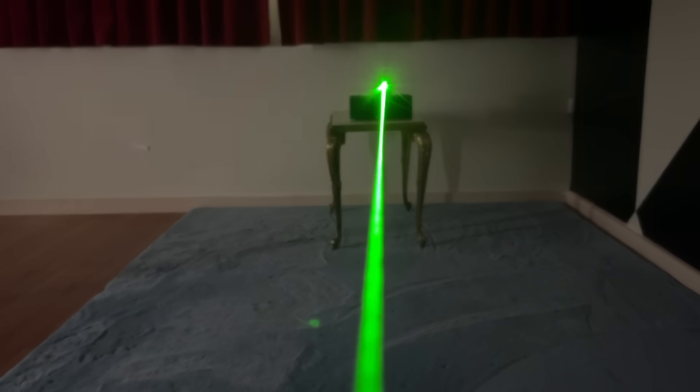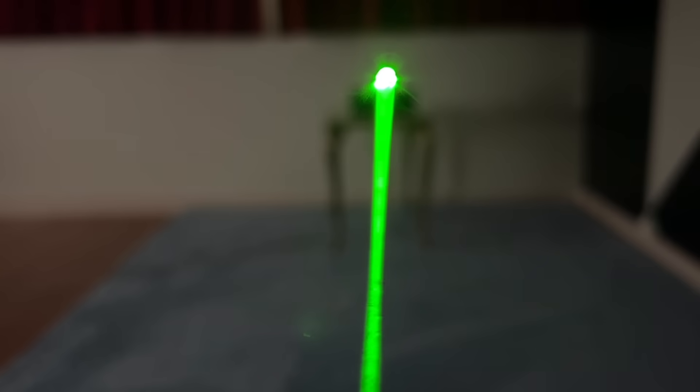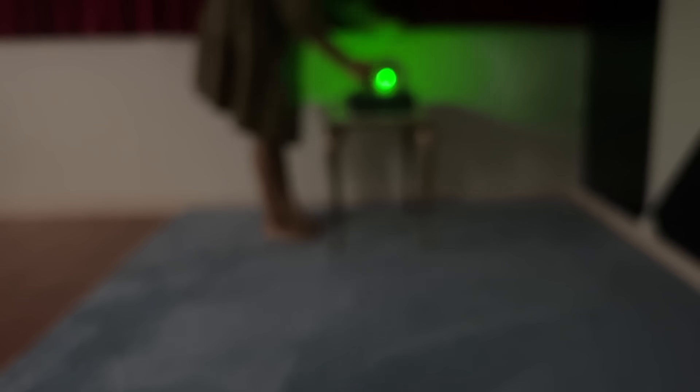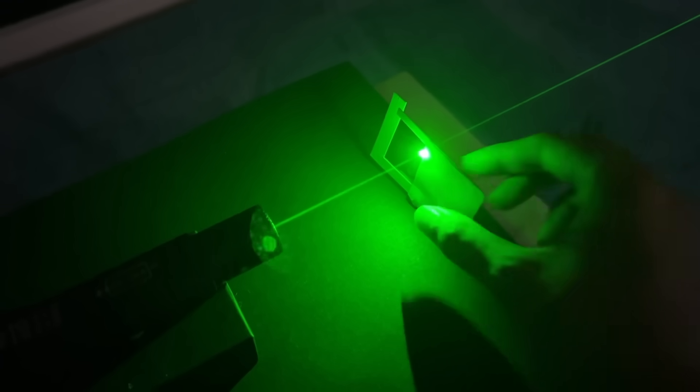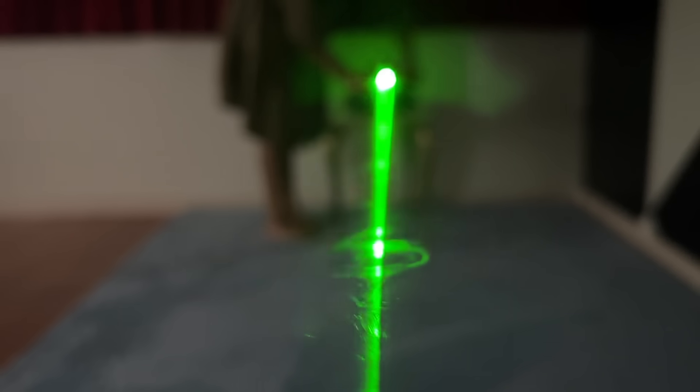So why was this experiment such a revelation for me? Well, it felt like I was actually seeing the light be a wave for the first time. Let me show you what I mean with this laser. Here you can see the narrow beam of the laser, but if I put this paper in the way, a wave should spread out. And yeah, that's exactly what the laser does. But to see it more clearly, let's add some smoke.